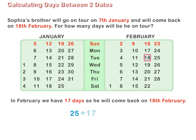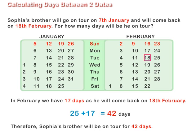So, 25 plus 17 is equal to 42 days. Therefore, Sophia's brother will be on tour for 42 days.